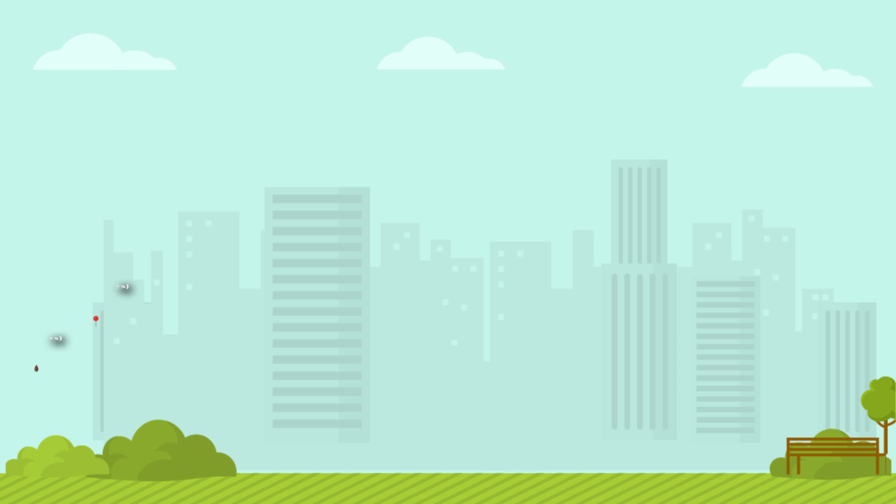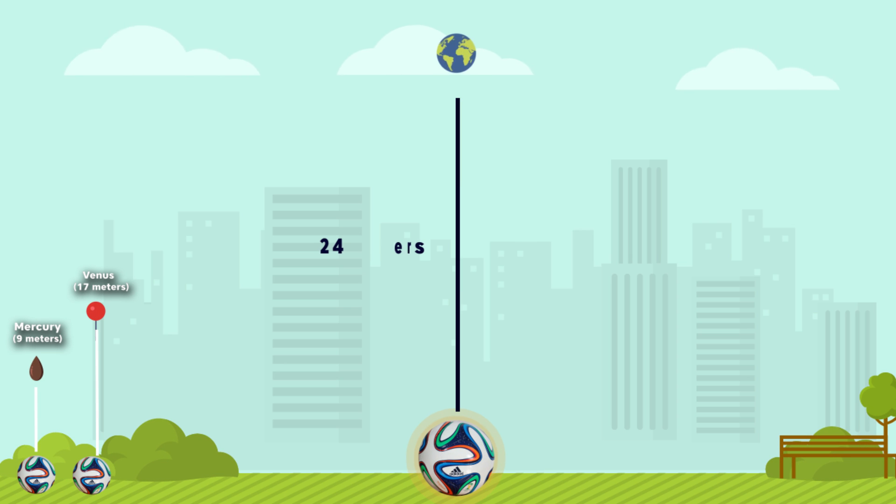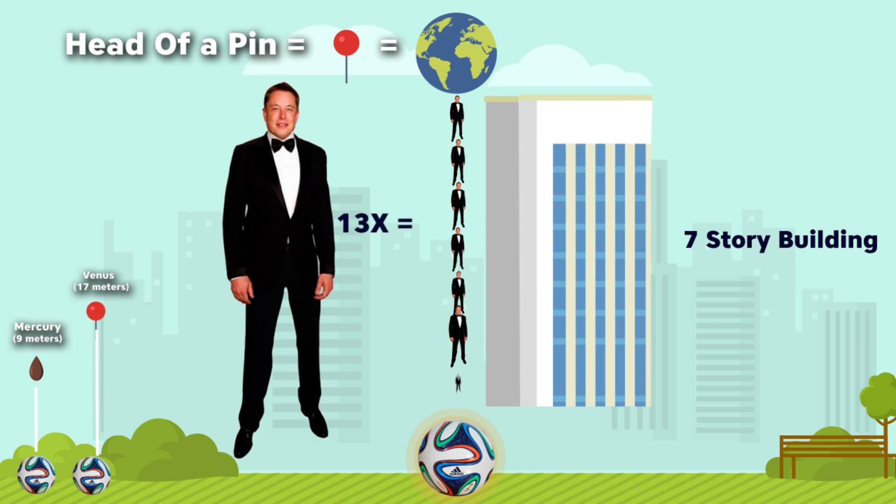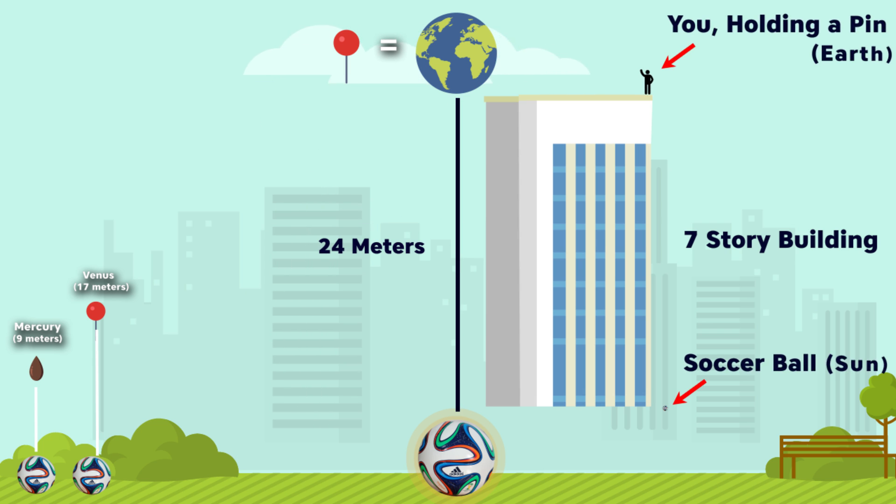And we come to Earth. Earth will be 24 meters away from our soccer ball sun with the size of a head of a pin, the height of a 7-story building. To put it into another perspective, that's 13 Elon Musks stacked one on top of another. Imagine you're standing on the 7th floor of a building holding a pinhead, and on the ground there is a soccer ball. That's where we are. That's the real scaled down distance of the sun and the Earth.